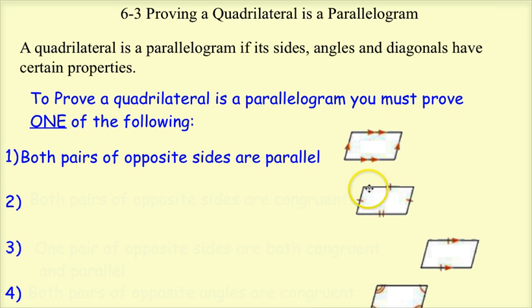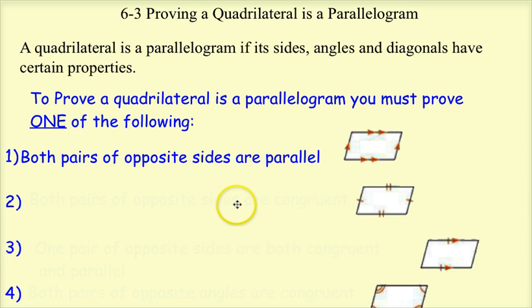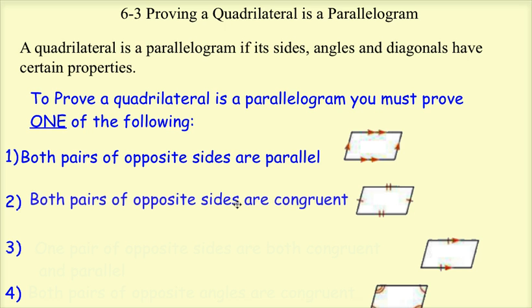The second way — looking at the picture, the top line is congruent to the bottom line, and the left line is congruent to the right line. So if I can prove both pairs of opposite sides are congruent, that's another way to prove a quadrilateral is a parallelogram. If both pairs of opposite sides are congruent and I can prove that, then I know it is a parallelogram.